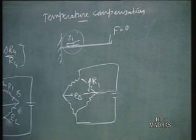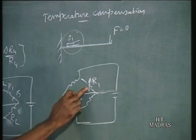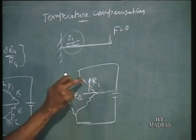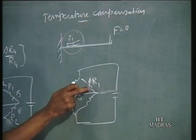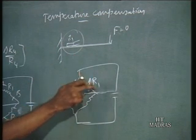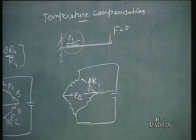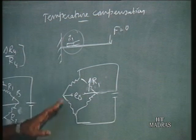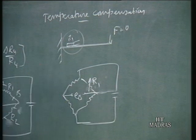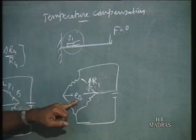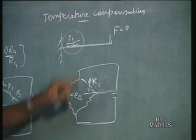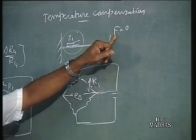The material making up the strain gauge wire has a resistance that increases whenever temperature increases. So there is a resistance change, but it is not due to F — it is due to temperature. Since it has changed from R1 to R1 + ΔR1, an output EO will appear. How to compensate for this? Even though temperature has increased, we do not want any output since there is no input force.